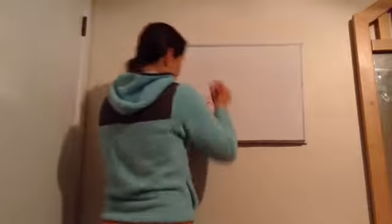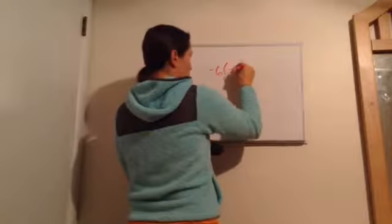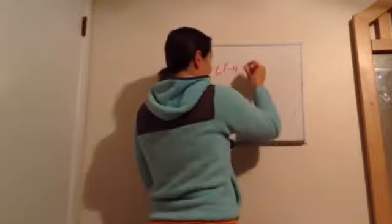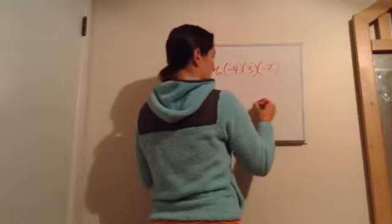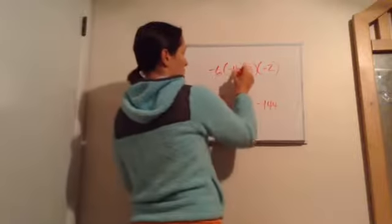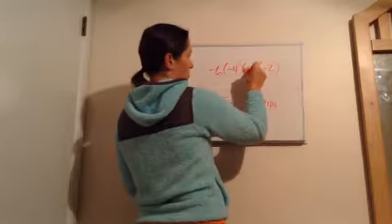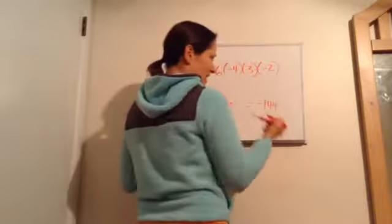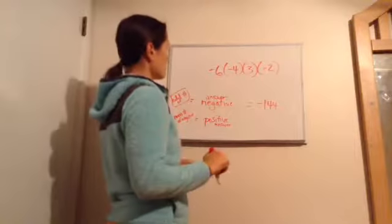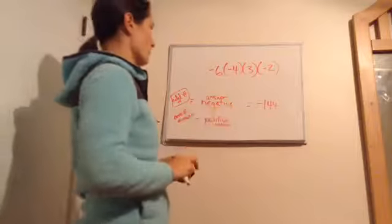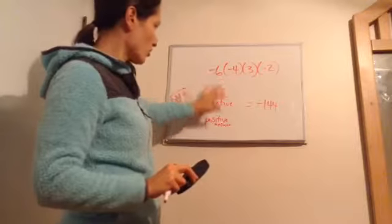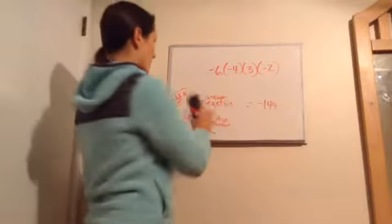Even if I rearrange the same exact numbers — putting the 4 in a different spot — I'll still end up getting negative 144. Why? Because again there are 3 negatives, which is an odd number. And 6 times 4 is 24, 24 times 3, times 2 ends up equaling 144. Just remember this — we'll go really heavily into it shortly, but get your mind thinking in that way.